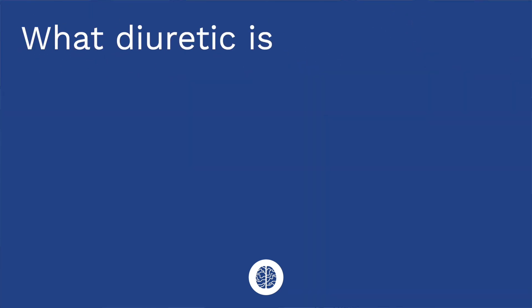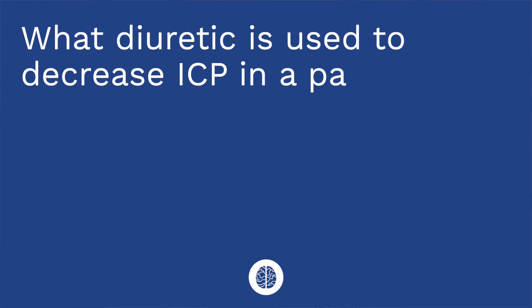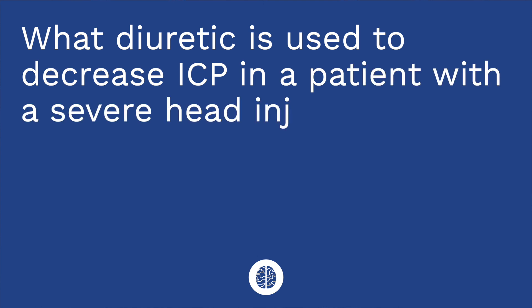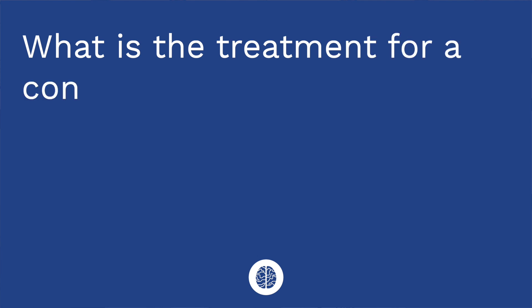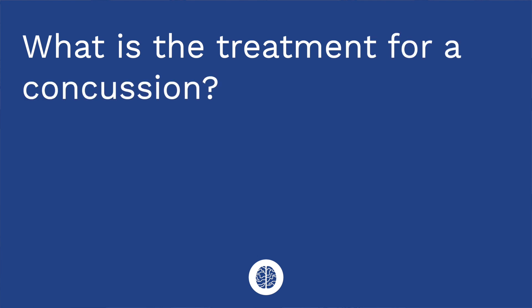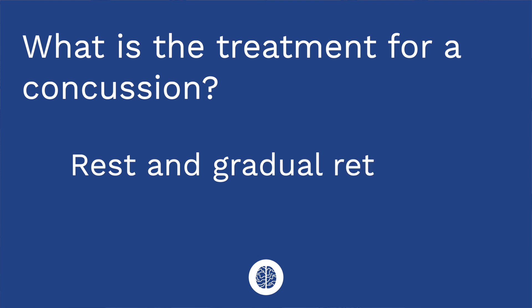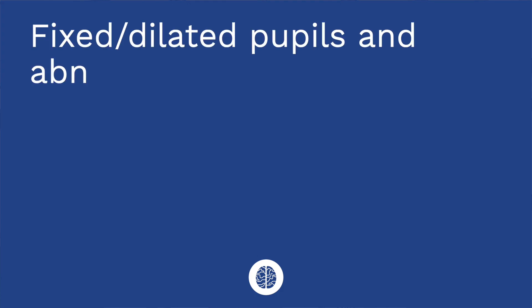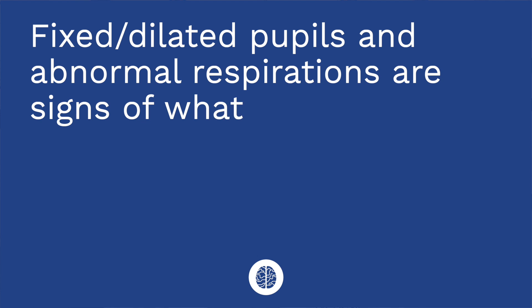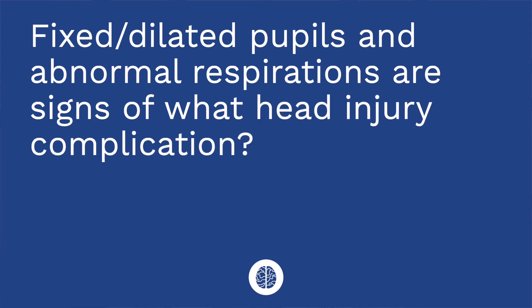It's time for a quiz — I have three questions for you. First question: what diuretic is used to decrease intracranial pressure in a patient with a severe head injury? The answer is mannitol. Question two: what is the treatment for a concussion? The answer is rest and a gradual return to activities — concussions are typically self-resolving. Question three: fixed dilated pupils and abnormal respirations are signs of what head injury complication? The answer is brain herniation.